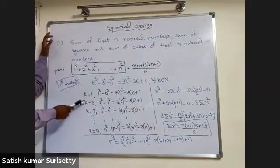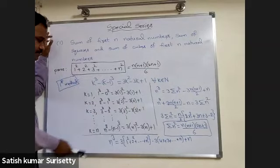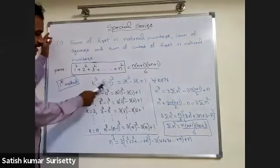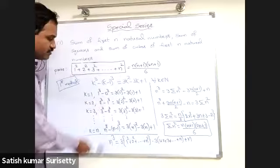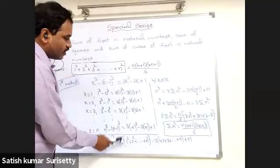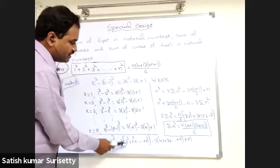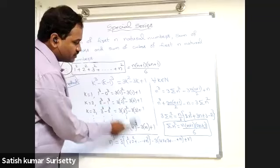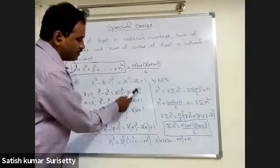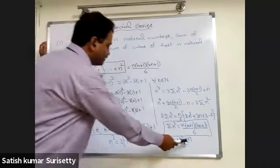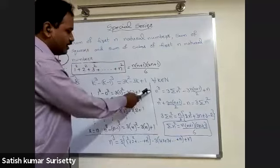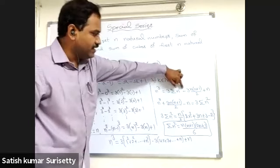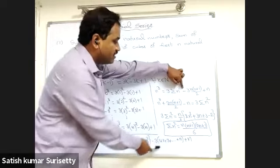Substitute k equal to 1, 2, 3 and so on n, and add all n equations. On the left side, only n cubed will be left out. On the right side, 3 is common giving 1 squared plus 2 squared plus 3 squared and so on n squared; minus 3 is common giving 1 plus 2 plus 3 and so on n; and 1 added n times gives plus n. So n cubed equals 3 sigma n squared minus 3 times n into n plus 1 by 2, plus n.